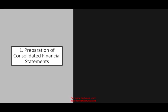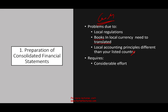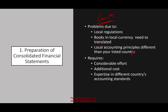Let's start by looking at the preparation of consolidated financial statements. Think about a company in the U.S. — let's assume GM, General Motors — listed on the NYSE. If they are operating in Mexico, China, or Japan, they have to comply with local regulations. They have their books in local currency, which will need to be translated. Local accounting principles may also differ from the listed country, so they have to make adjustments for both accounting principles and currency. This means considerable effort and additional cost, requiring people familiar with both systems and expertise in different countries' accounting standards.